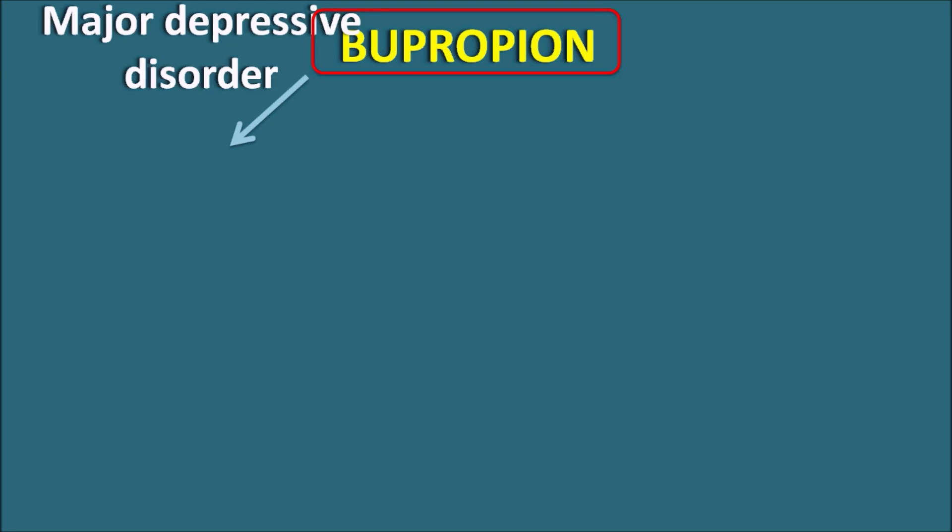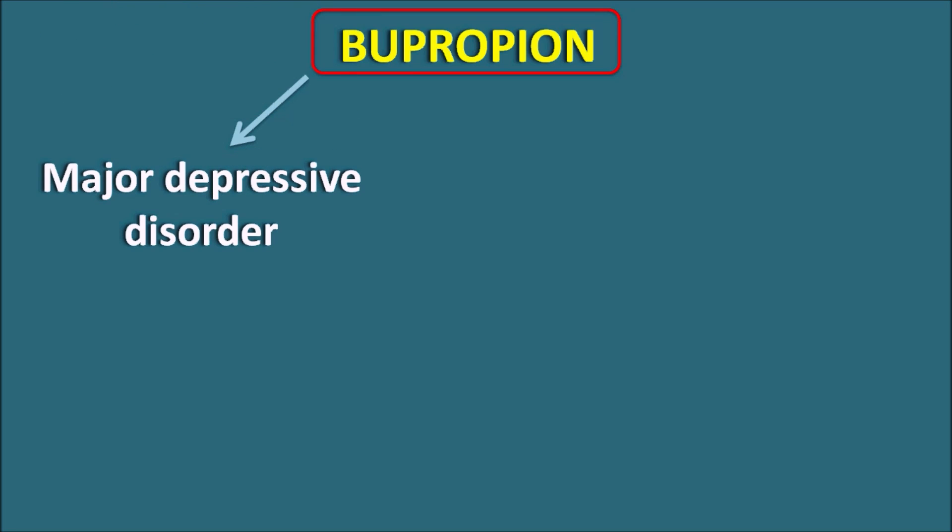Hi everyone. Today in this video we are going to discuss bupropion — how this drug acts as an atypical antidepressant. Bupropion is classified as an atypical antidepressant and is particularly used in the treatment of major depressive disorder.